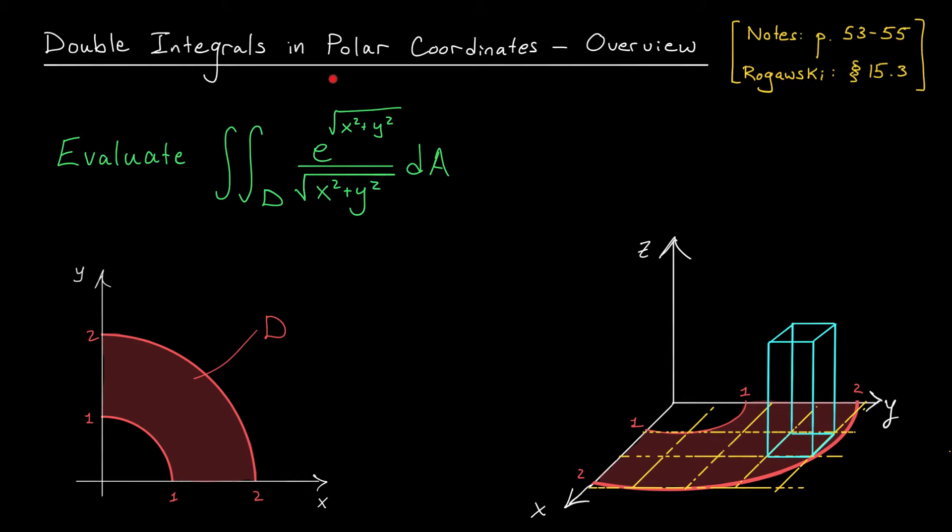We can evaluate double integrals of reasonably nice functions over reasonably nice regions of type 1 or type 2. But it turns out there are lots of nasty integrals out there that we still can't evaluate very easily. Take, for example, something like this. The double integral over this region D of this gross function, e to the root x squared plus y squared, divided by the square root of x squared plus y squared. Oh, this function looks horrible, and the region isn't much better.